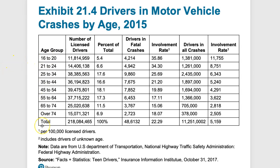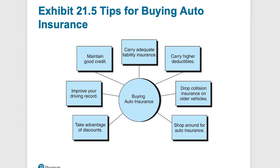Looking at crash data by age group: about 5% of drivers are 16 to 20, but their involvement rate in accidents is 35 per 100,000 licensed drivers — the highest of any age group. The lowest involvement rate is in the 65 to 74 age group. This data on drivers in all crashes and fatal crashes illustrates why younger drivers face higher insurance rates.